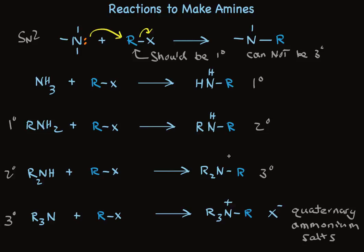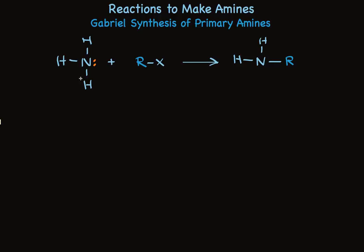There's a very clever way to avoid overalkylation if you want a primary amine. It's called the Gabriel synthesis of primary amines. It accomplishes the transformation of an alkyl halide into a primary amine, but the product we make is not subject to additional alkylation. So the yields of primary amines are significantly better.